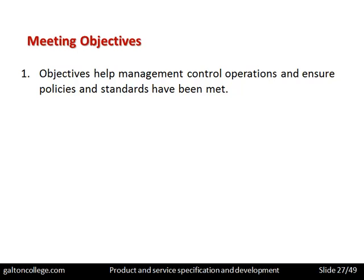Objectives help management control operations and ensure policies and standards have been met. Having decided to make the product, objectives must be clearly set: what are the objectives of each section, who is responsible for production within that section, what is the timescale, what resources are required? Management needs to control the whole process to bring the product to market. Standards should be set right throughout the organisation, with accountability so that individual managers are named as responsible for particular processes.